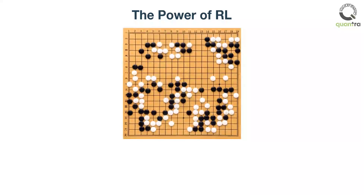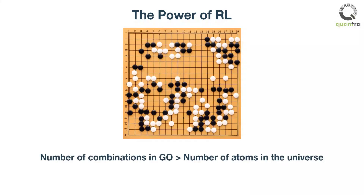It is said that Go has more possible combinations than the number of atoms in the universe. For a long time, it was thought that no AI could beat a human in Go. And yet, the AI defeated the top player in the game recently.